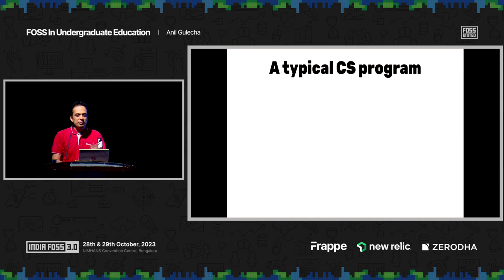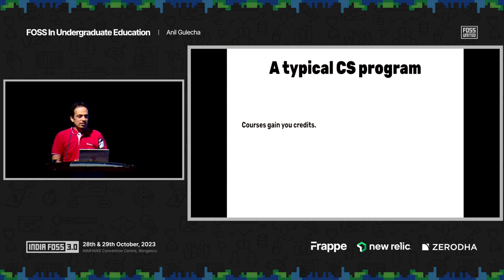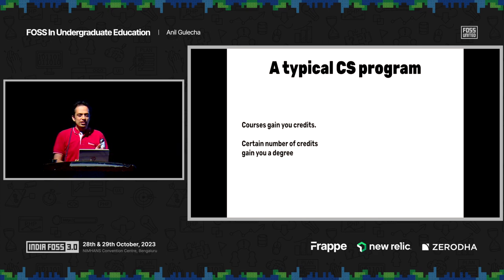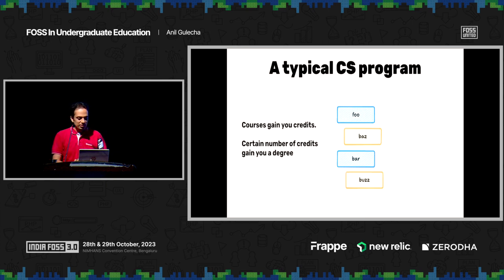What's an undergraduate computer science program? Basically, there's a set of courses. Courses give you credits — typically a four-credit or eight-credit course. You add them all together and you have a bag of credits. When you collect enough, you get an undergraduate degree — typically 160 up to 200 credits, depending on the type of program. So you have a list of courses.